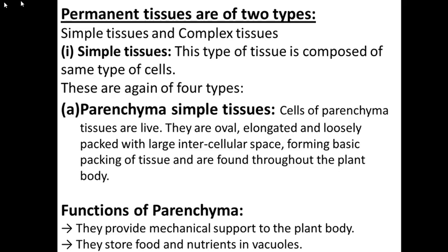The first type is parenchyma simple tissues. These tissues are found in all the soft parts of the plant. They are called simple tissues because only one type of cell is present — similar to a chemical element having only one type of atom. Whatever cells are present in simple tissues are of the same type, which is why they are called simple tissues.